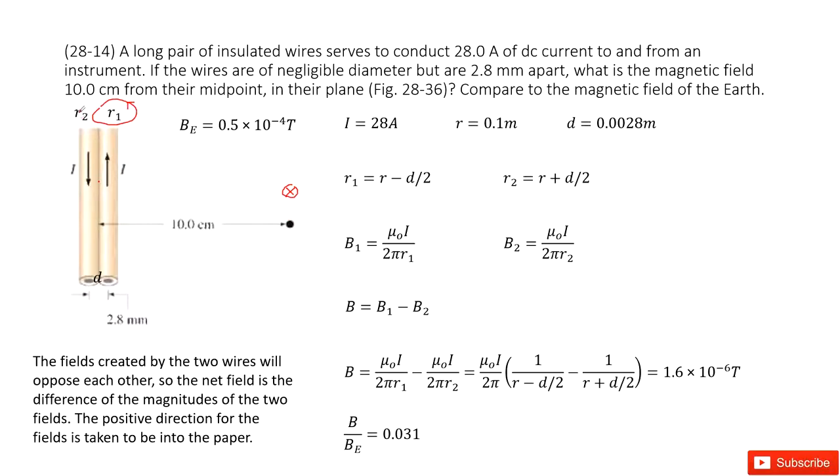Now we look at wire 2. You can see this time the current moves downward. When it is downward, the magnetic field travels in the opposite direction, this way.